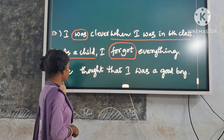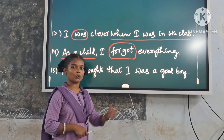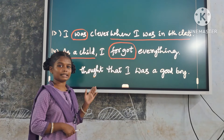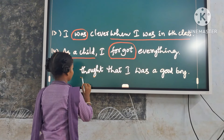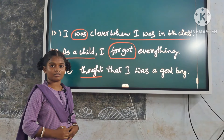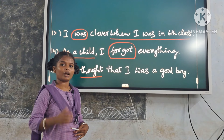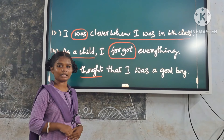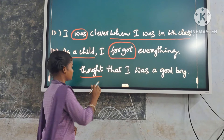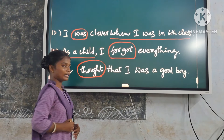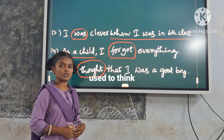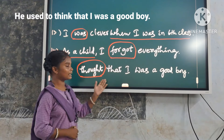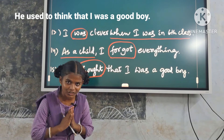Fifteenth example: 'He thought that I was a good boy.' Here, the verb in the main clause is 'thought' — that is, a stative verb. So we use only 'used to'. Replace it with 'used to think'. Answer: 'He used to think that I was a good boy.' Thank you.